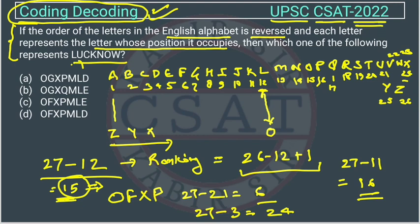Similarly we will do for N. N is 14 here. So 27 minus 14 is equal to 13.